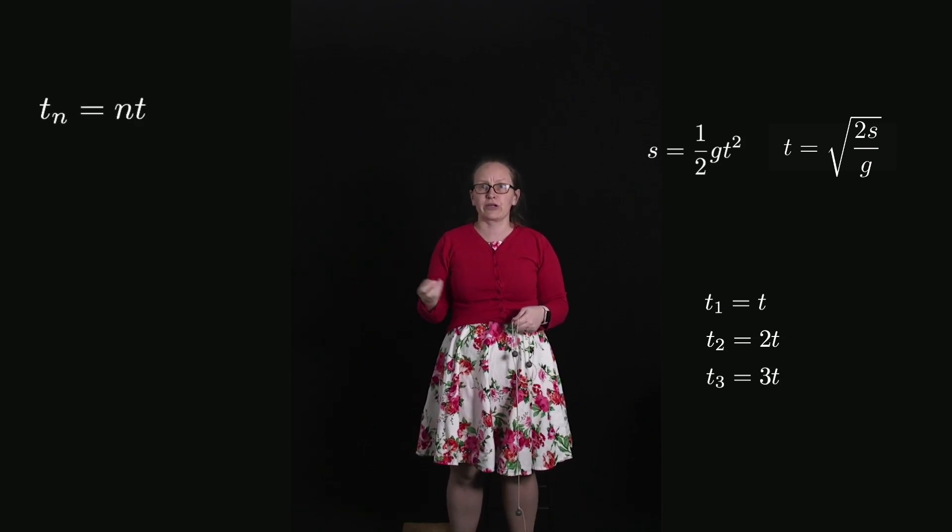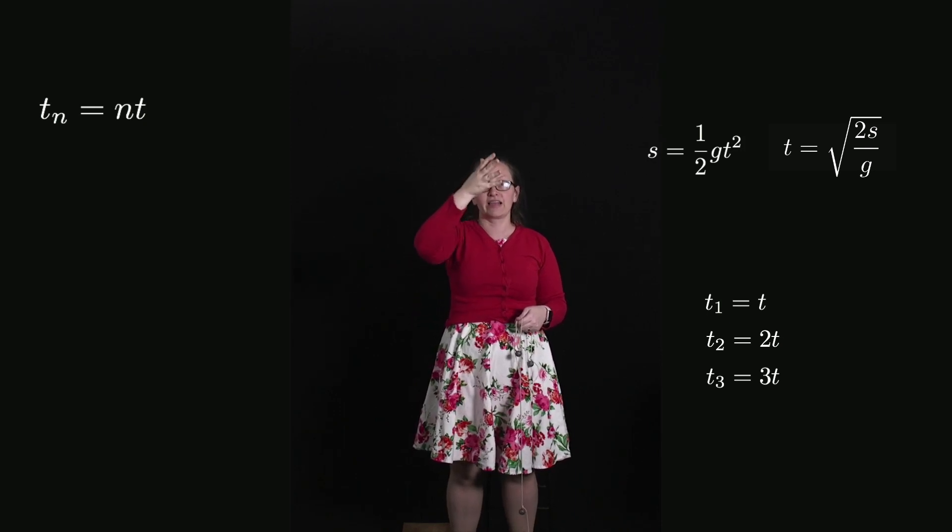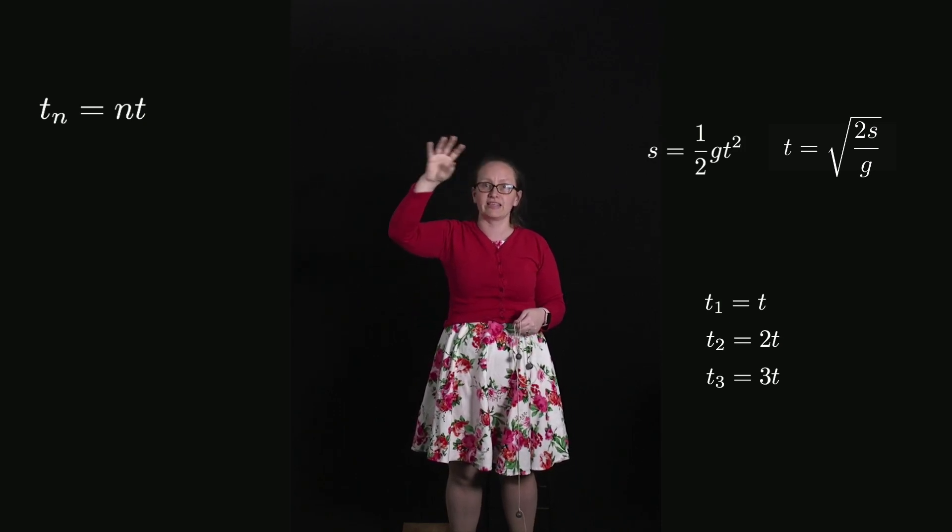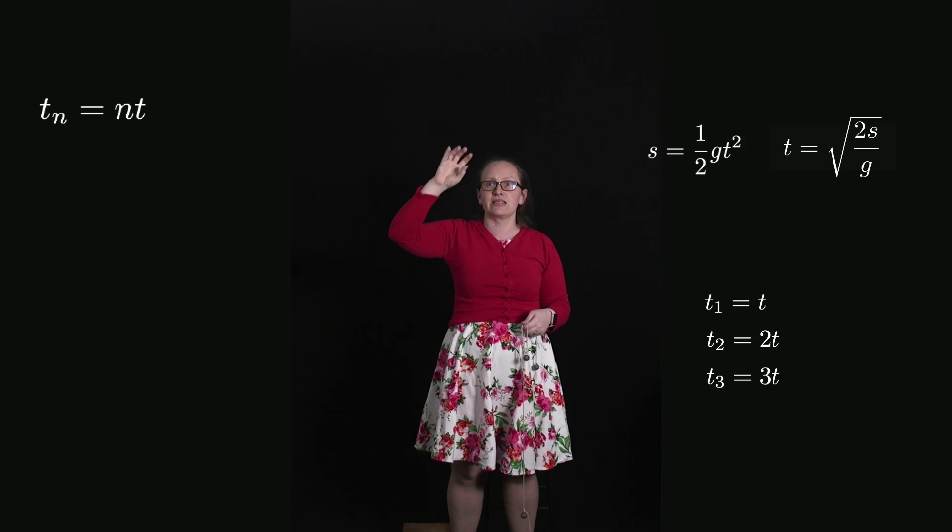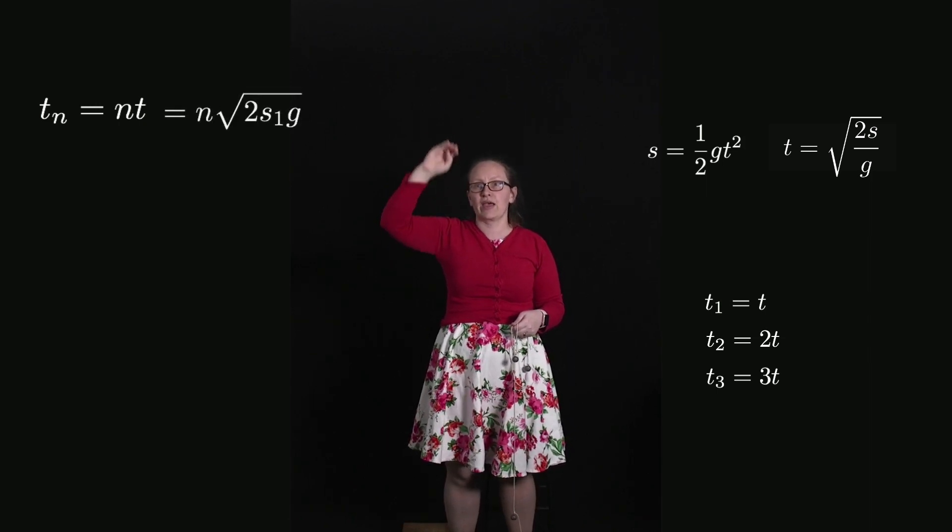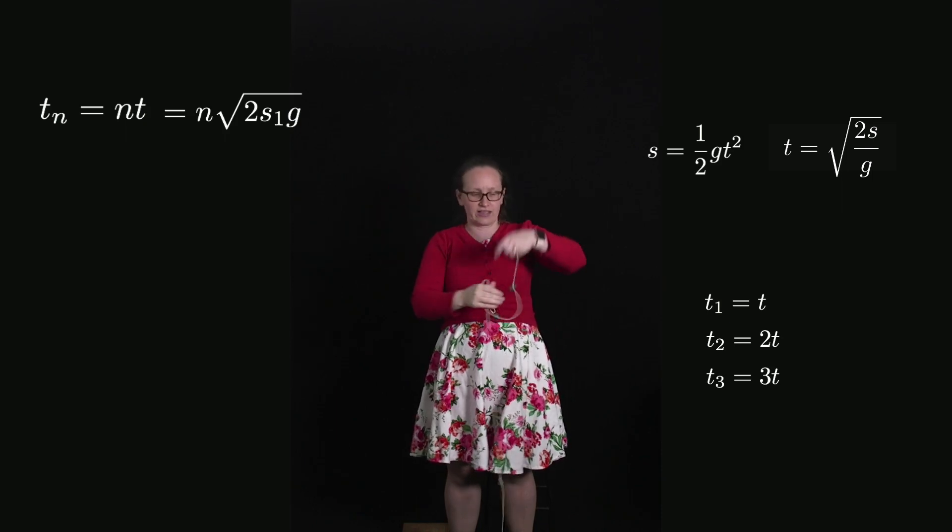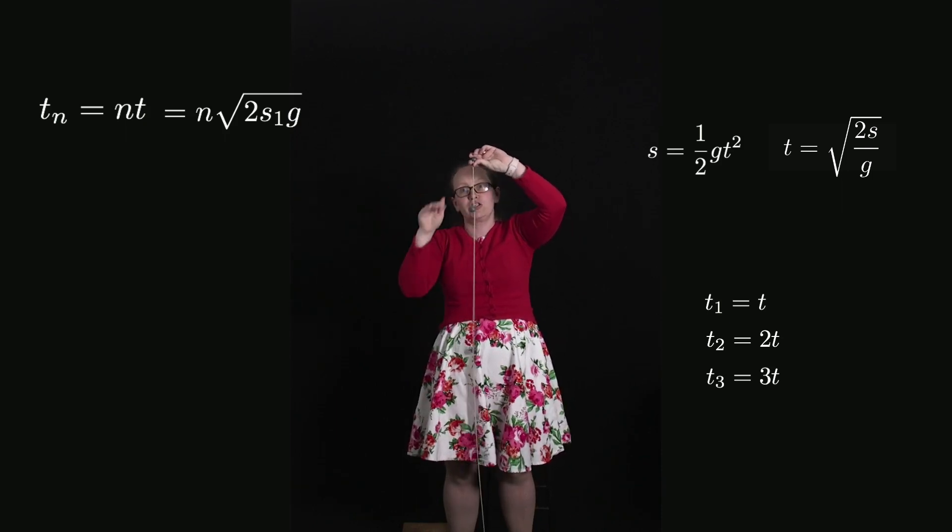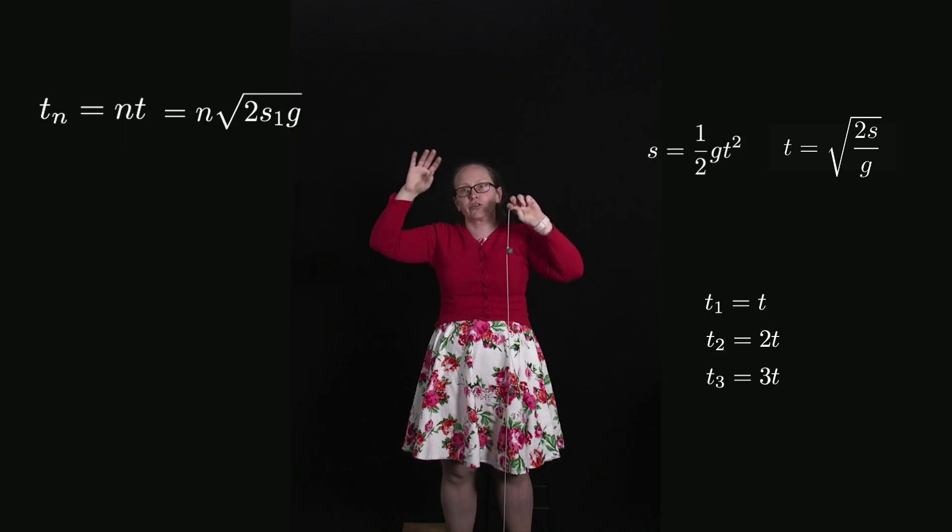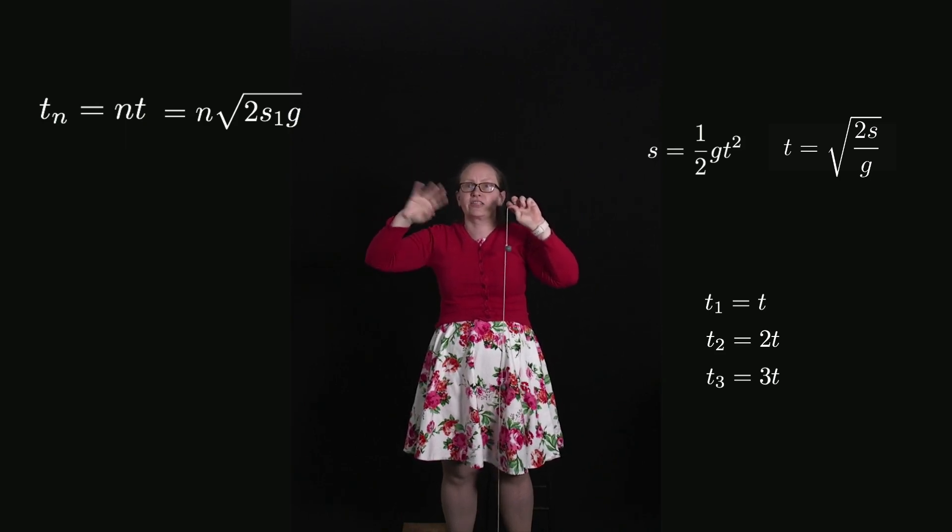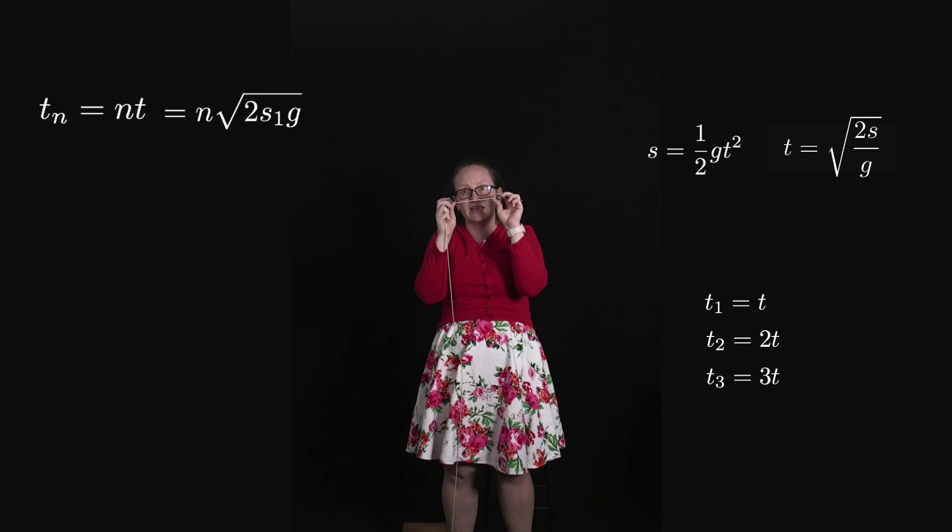Looking at our equations, we've got that our nth time interval tₙ = nt. So this is equal to n times the square root of 2 times the first distance (that's the distance between the first two masses) over g, because the square root of 2s₁g is the time it takes the first mass to fall.